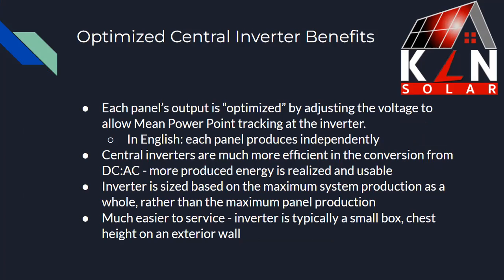Now let's switch over to optimized central inverters. What are the benefits? With this system, every panel's output is optimized — the voltage is adjusted to follow the maximum power point tracking of the inverter, which basically means the voltage is adjusted to what the inverter can most efficiently handle, allowing each panel to produce independently. Central inverters also tend to be more efficient in converting DC to AC, meaning more of the energy you produce is realized and usable by your home. Also, the inverter is sized on the maximum realistic system production as a whole rather than the maximum individual panel production. And they're easier to service — typically a small shoebox-sized box mounted chest height on an exterior wall, so no tunneling under panels if it goes bad.